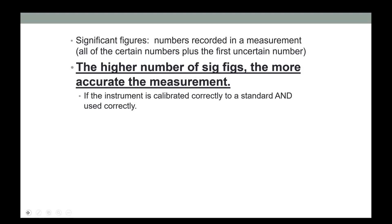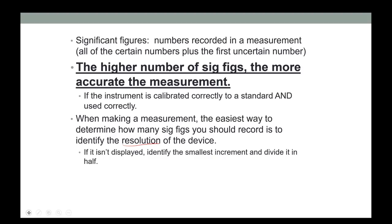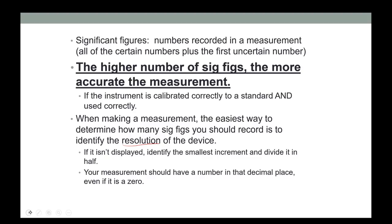If you use the device correctly and apply the right resolution when making a measurement, the easiest way to determine how many sig figs you have is to identify the device's resolution — take the smallest increment, divide it in half, and put a number in that decimal place, even if it is a zero.